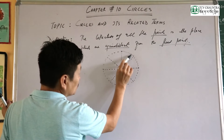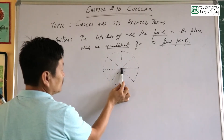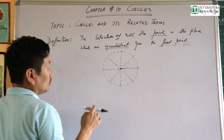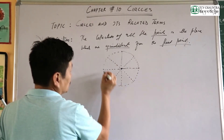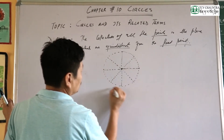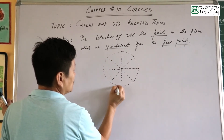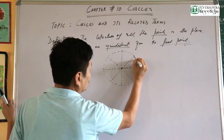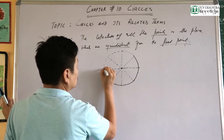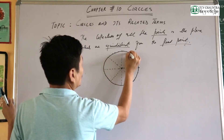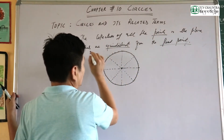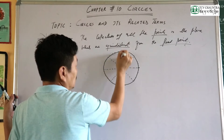If you have a lot of points, you can see that they are all at 5cm from the center. You can see that the points together form a circle. So the definition: all the points in the plane which are equidistant from the fixed center form the circle.